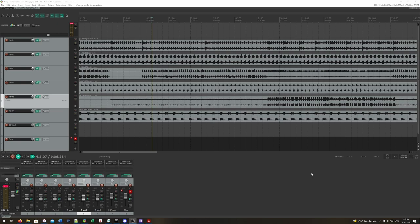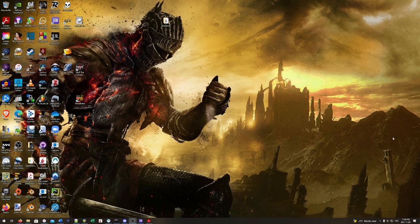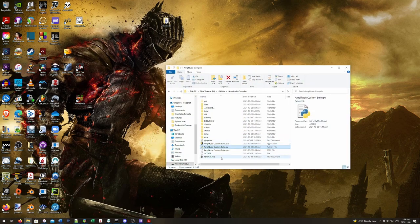After you create your audio, you want to create the MIDI file for your song. The MIDI file contains the playable tracks as well as some text events that will change the background of the game while playing. The playable tracks all start with T followed by a number, the word catch, a colon, the first letter of the instrument, a colon, followed by the full name of the instrument. Luckily there is an easy way to create all tracks necessary — in the description will be a link to my Amplitude compiler or Amplitude Custom Suite, a script I created to help you get started and compile a custom.